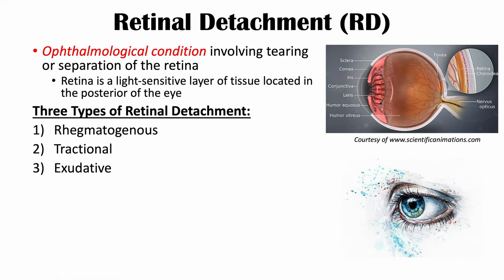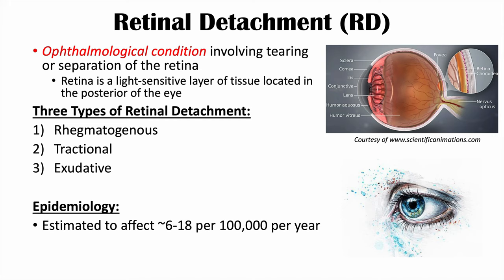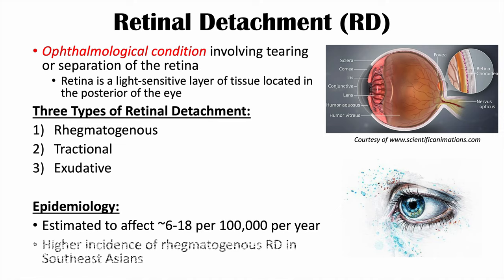How many people are affected by retinal detachment? It's estimated to affect 6 to 18 per 100,000 per year. There are different incidences across different populations — for instance, there is a higher incidence of regmatogenous retinal detachment in Southeast Asians.